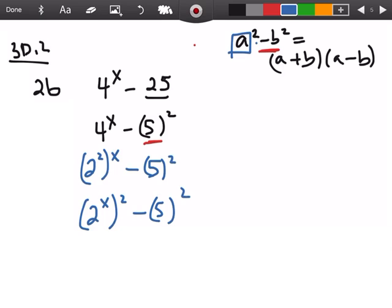We have a² - b². There's the a, that's the b. So now I can write that as (2^x + 5)(2^x - 5).